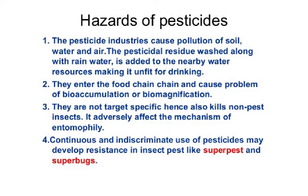The hazards of pesticides are significant: the chemical residue washed along with rainwater is added to nearby water resources, making them unfit for drinking. Pesticides enter the food chain causing problems through bioaccumulation and biomagnification. They are not target-specific, so they also kill non-pest insects. They adversely affect entomophily — insect pollination. Continuous and indiscriminate use of pesticides may also develop resistance in insect pests, creating super pests and superbugs.